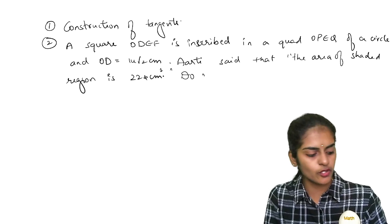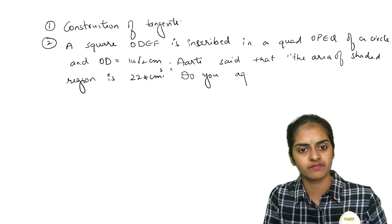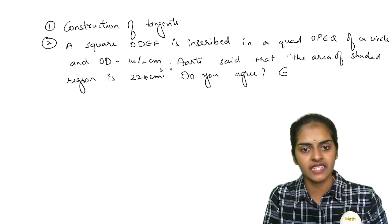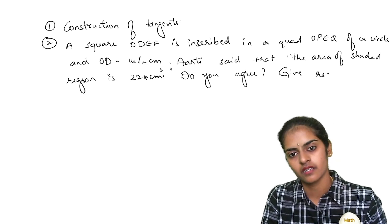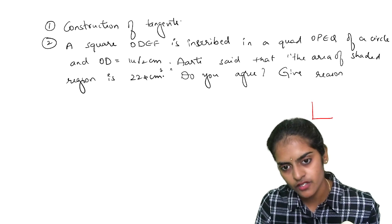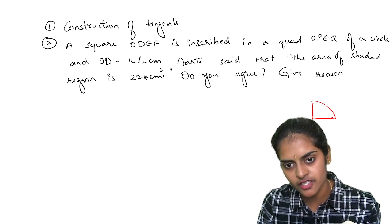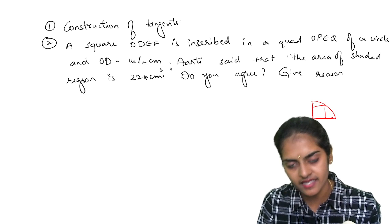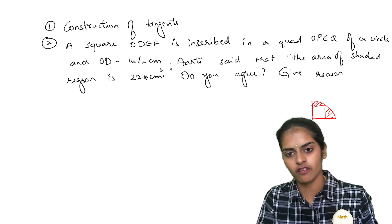that the area of shaded region is 224 cm square. You need to draw the figure here. So do you agree? Give reason. So here basically let me draw the figure for you. This is the semi-circle in which you have the square inscribed. You need to find the area of the shaded region.